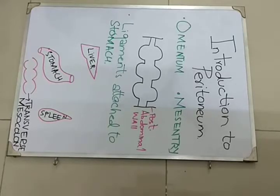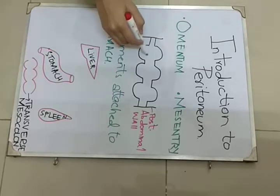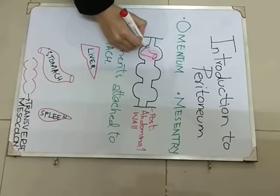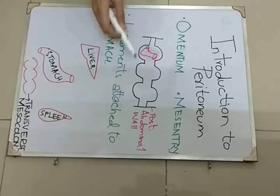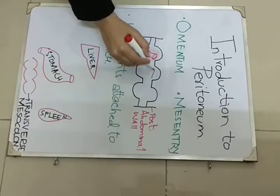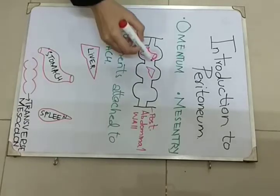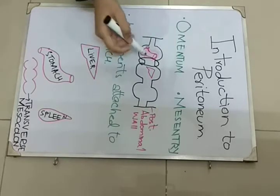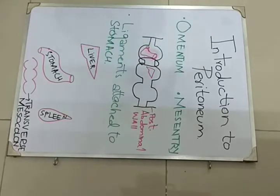Here I have a diagram to show you — this is just a hypothetical diagram for understanding. If we consider that this is the stomach and this is some other organ, let it be the liver, then the omentum — that is, this double layer of peritoneum — which is connecting the stomach and the liver is known as the omentum.